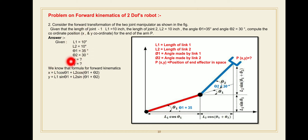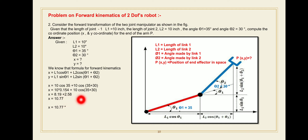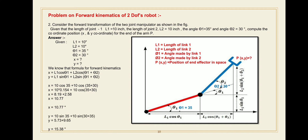Now put all four given values into the equations and find X and Y separately. For X: X is equal to 10 cos(35) — where L1 is 10 and theta 1 is 35 — plus 10 cos(35 plus 30), which is L2 cos(theta 1 plus theta 2). Put in all given values and solve the equation. The final value of X is equal to 10.77, meaning the X coordinate is 10.77.